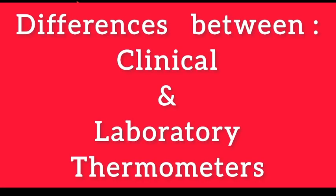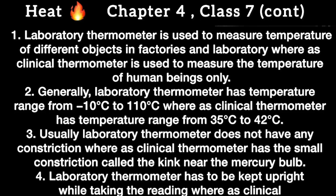Let me explain the differences one by one. First, the temperature ranges are different: the clinical thermometer measures 35 to 42 degrees centigrade, while the laboratory thermometer measures minus 10 to 110 degrees centigrade. Second, for the clinical thermometer you take it out of the mouth and then read it, but for the laboratory thermometer it must remain immersed in the liquid while reading. Third, in the clinical thermometer there is a small constriction called a kink — located just above the bulb — which prevents mercury from falling back. The laboratory thermometer has no such kink.